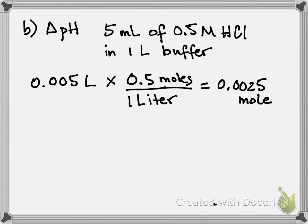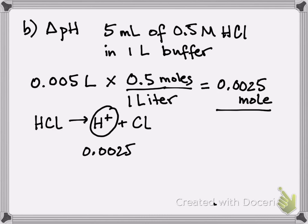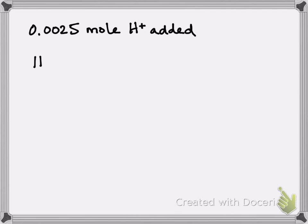I keep saying moles, but this is all less than 1, so it's really mole. And if you remember from class, a strong acid will dissociate completely. So when you've added this amount to your buffer, that's the amount of protons that you've added. So 0.0025 moles of H-plus is added.